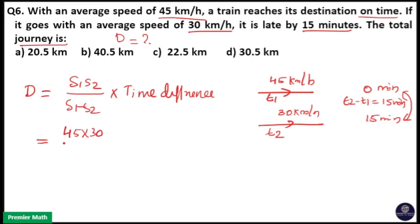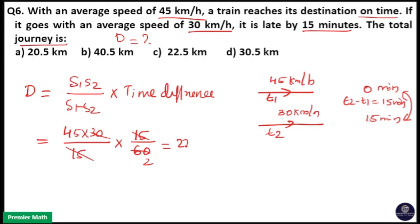Here, S1 times S2 is equal to 45 into 30, and the difference in speed is 45 minus 30, which equals 15. The time difference is 15 minutes, so I will convert it to hours: that is 15 by 60. The 15s cancel, giving 30 into 2, so 45 into 2 is equal to 22.5 km. Option C is your answer.